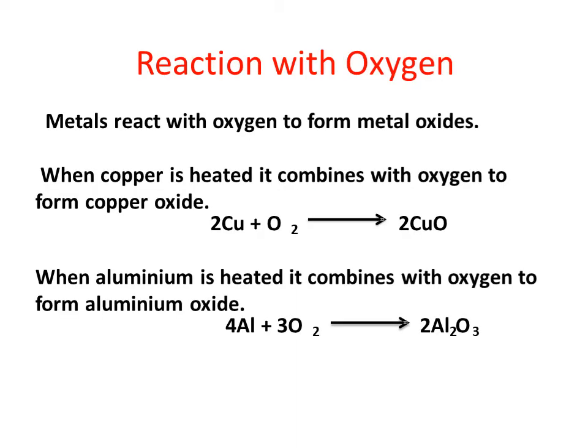Reaction of metals with oxygen. Metals react with oxygen to form metal oxides. For example, when copper is heated it combines with oxygen to give copper oxide. Similarly, when aluminum is heated it combines with oxygen to form aluminium oxide.